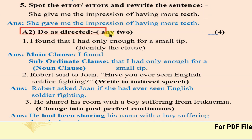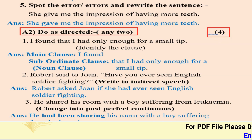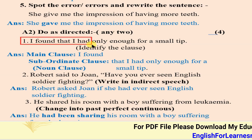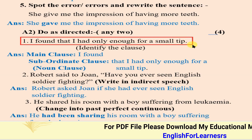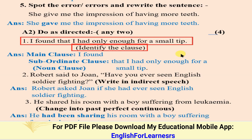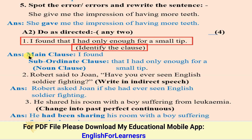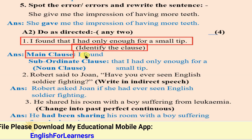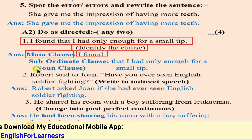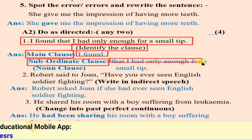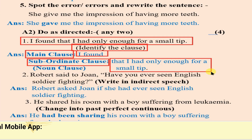Next, A2: do as directed, any two, for four marks. Number one — the sentence given is: 'I found that I had only enough for a small tip.' Identify the clause. There are two clauses: the main clause is 'I found', and the subordinate clause — also called a noun clause — is 'that I had only enough for a small tip'.